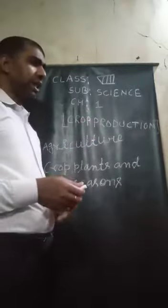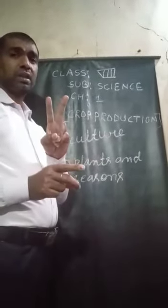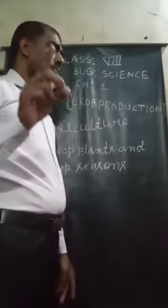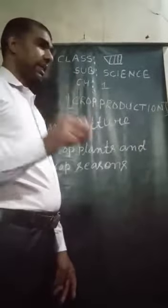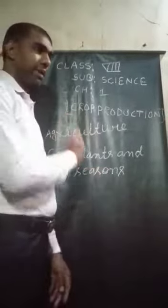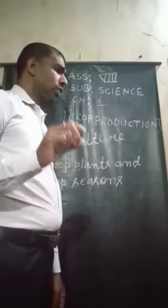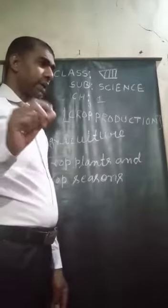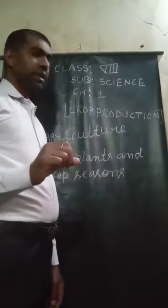Crop plants can be classified in two ways: on the basis of the product obtained, and on the basis of the seasons in which they grow. On the basis of the product obtained, crop plants are classified as cereals, pulses, oilseed crops, fiber crops, root crops, and tuber crops.